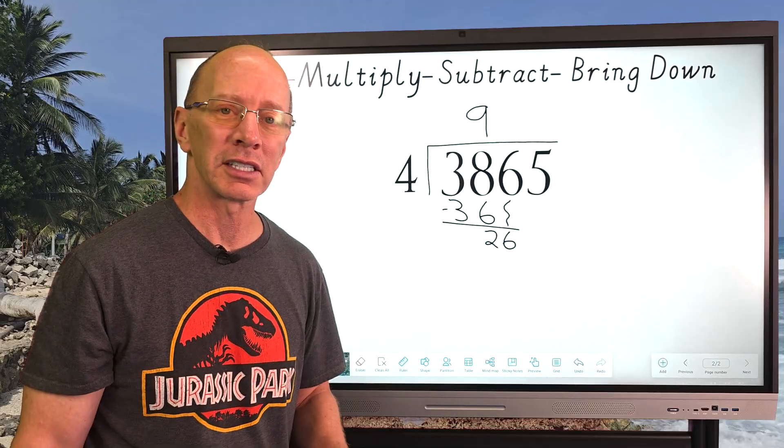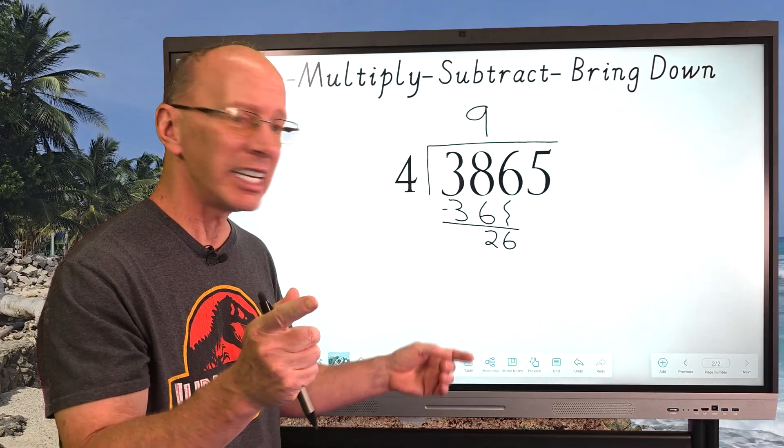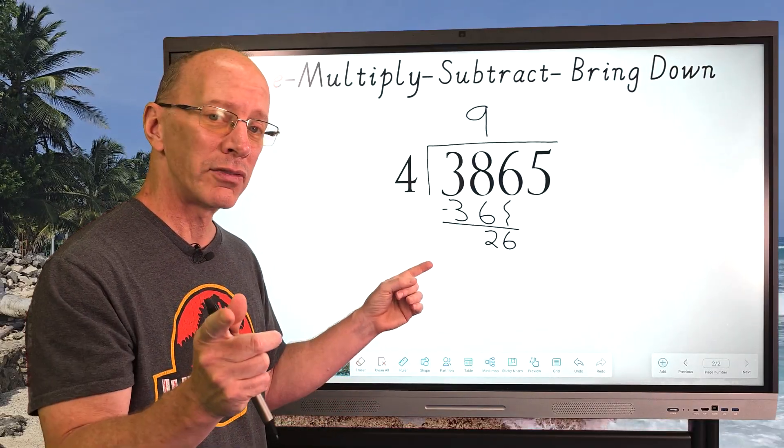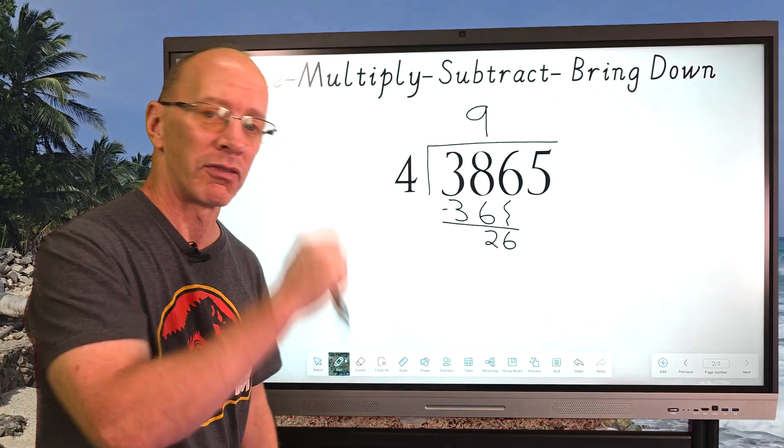How many times can I put four into 26? Four times three, 12. Four times four, 16. Four times five, 25. Four times six, 24. Four times seven, 28. Too big. We're going to stay with four times six. So I'm going to go ahead and put the six right here.